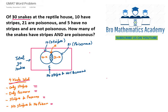If we look at the problem closely, there are four kinds of total snakes. The first type being the snakes which have only stripes, the second type will be the snakes which are only poisonous, the third type will be the snakes which have stripes and are poisonous — let's assume their value to be X, as shown in the diagram — and the fourth type will be the snakes which have no stripes and are not poisonous.